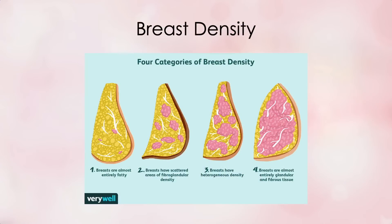Here's a photo depicting four levels or degrees of breast density. The first one is not dense at all — it's all fat, which is yellow. The second one has areas of dense tissue that are just scattered about; the pink parts represent the dense fibrous tissue. The third one is called heterogeneously dense, meaning that it's about half and half — half fat and half dense fibrous tissue. And the fourth one is extremely dense, consisting almost entirely of the dense pink tissue.